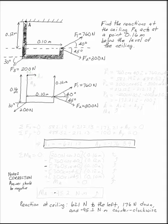Find the reactions at the ceiling. F3 acts at a point 0.16 meters below the level of the ceiling. First thing to do is to draw a free body diagram.